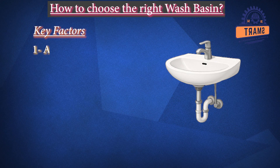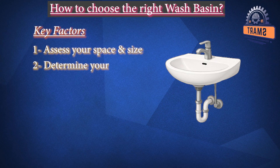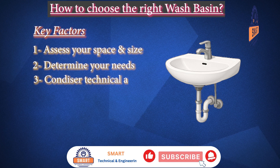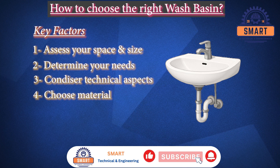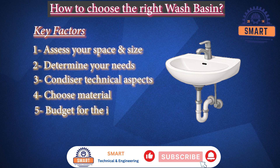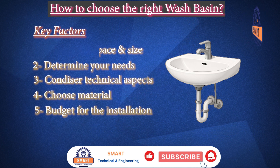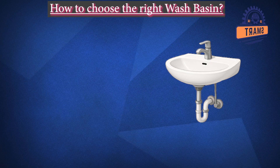The five key factors are: 1. Assess your space and size, 2. Determine your needs, 3. Consider technical aspects, 4. Choose material, and 5. Budget for the installation. Now I will explain these key factors one by one.